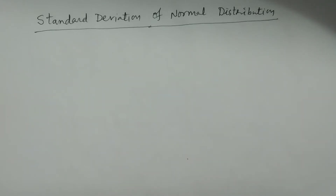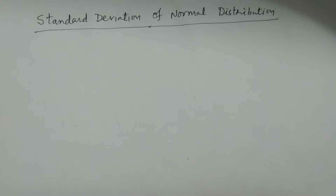Welcome to BSE statistics students. In this lesson I explain the standard deviation of normal distribution. The standard deviation of normal distribution is going to be calculated with the help of the variance. If we calculate variance, we can calculate the standard deviation by taking the square root. So therefore I calculate variance first.